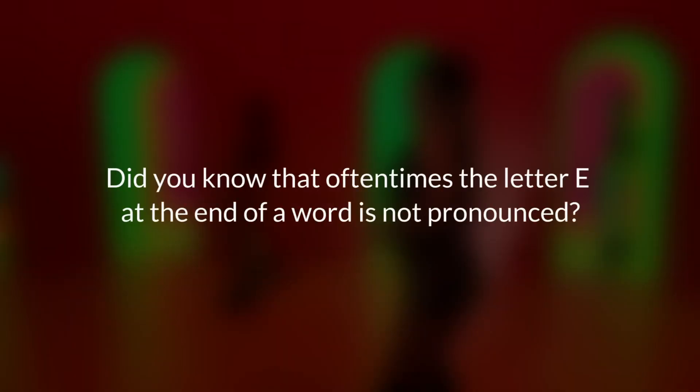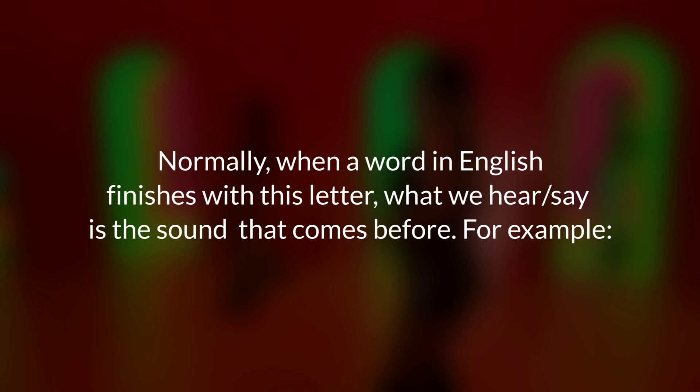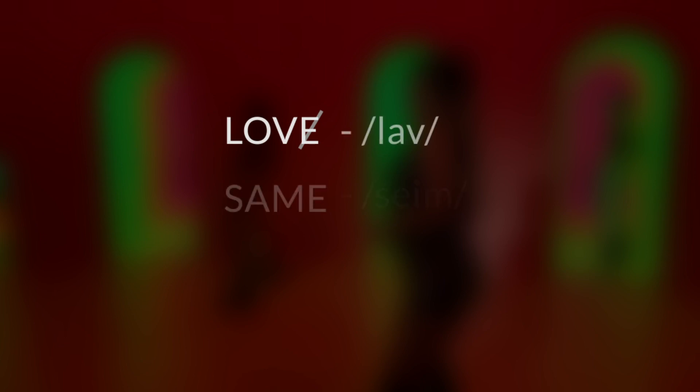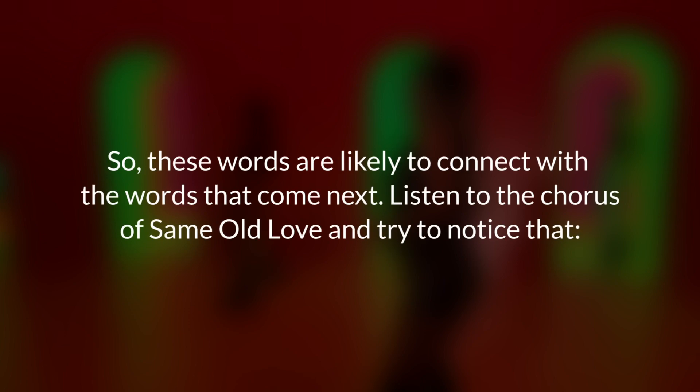Did you know that oftentimes the letter E at the end of a word is not pronounced? Normally, when a word in English finishes with this letter, what we hear or say is the sound that comes before — for example, 'love,' 'same,' 'like.' So these words are likely to connect with the words that come next. Listen to the chorus of 'Same Old Love' and try to notice that.